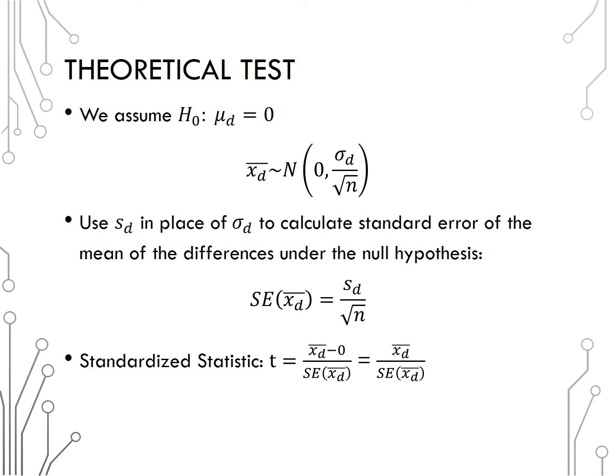That means our standardized statistic, which is always our statistic minus the null divided by standard deviation of the statistic, becomes X bar d minus zero divided by that standard error formula just given, or simplified, X bar d divided by S sub d over the square root of n.